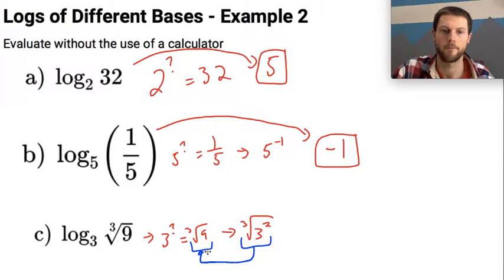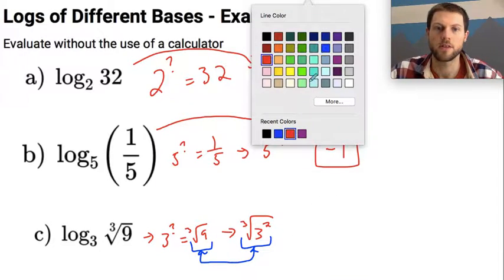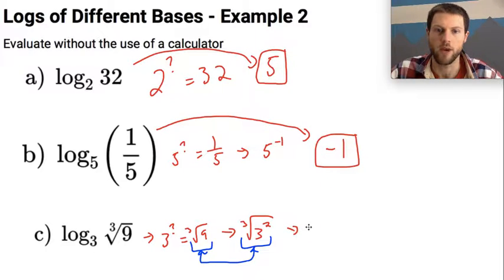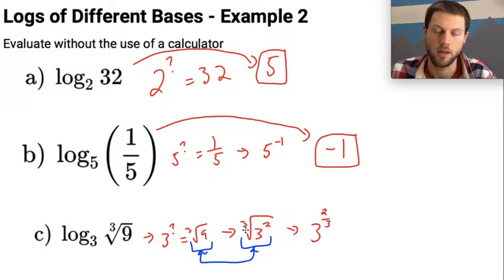And I could take it a little bit further, and I could say then that this could be written as a rational exponent, 3 to the 2 thirds power. So remember, a radical, the index in a radical is the denominator of your exponent.